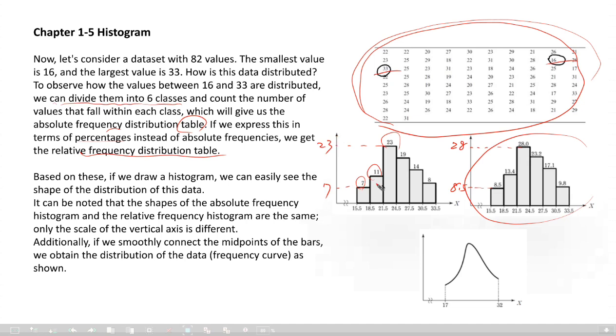Based on this, when we draw a histogram, we can easily see the shape of distribution of data. It can be noted that the shapes of the absolute frequency histogram and the relative frequency histogram are the same, are equivalent. I use a different scale of the vertical axis.